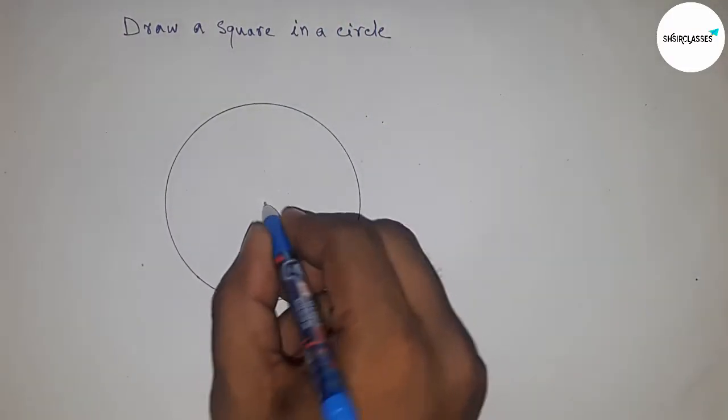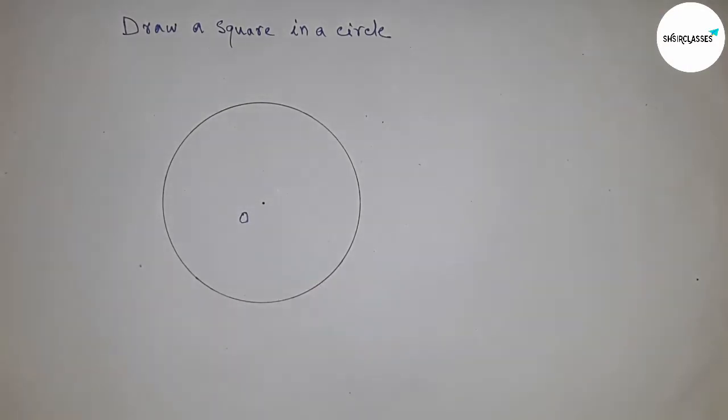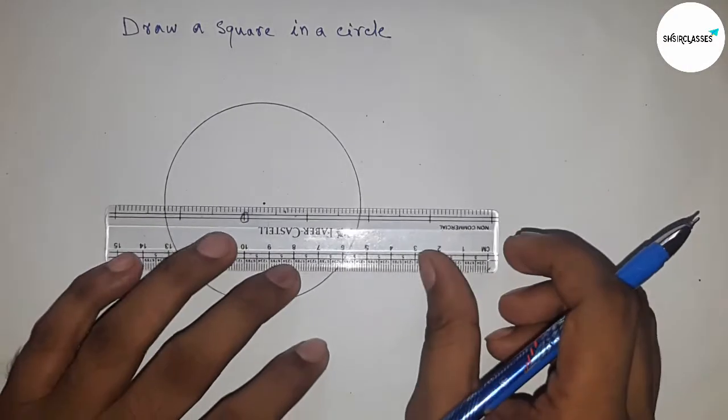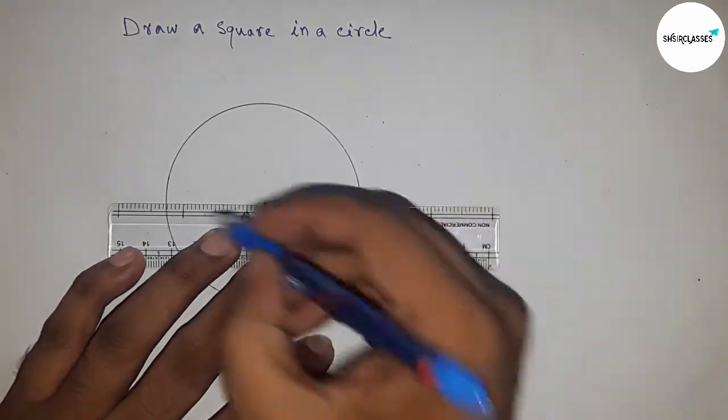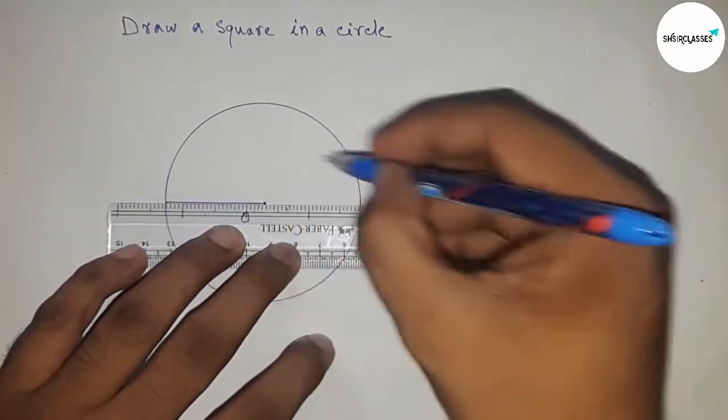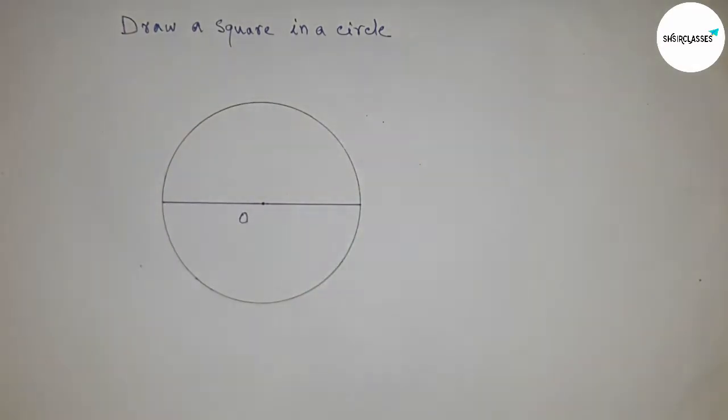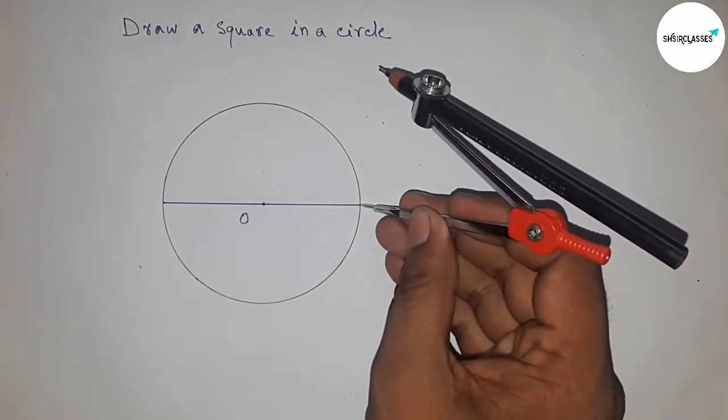This is the center of the circle. Now draw the diameter. Next, for bisecting the diameter, put the compass here.